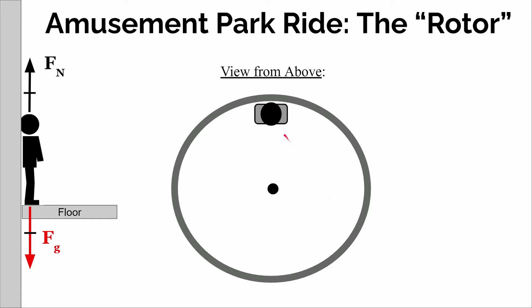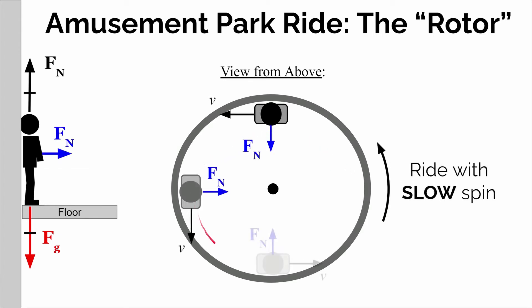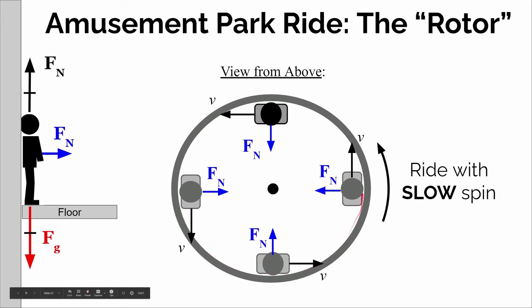When you get inside of this cylinder, you stand up against the wall, and there's a gravitational force pulling down on you and the floor is going to be pushing back up with a normal force the same size as the gravitational force. This is when the ride is at rest and not spinning. The ride slowly starts to spin and you're going to move around in a circular path as the whole thing starts to spin.